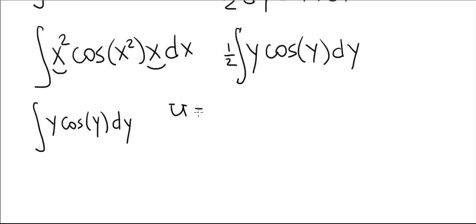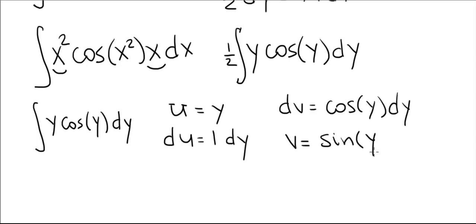u is going to be y, therefore du is 1 dy, dv is cosine of y dy, and that makes v sine of y. We'll just take the constant to be 0.